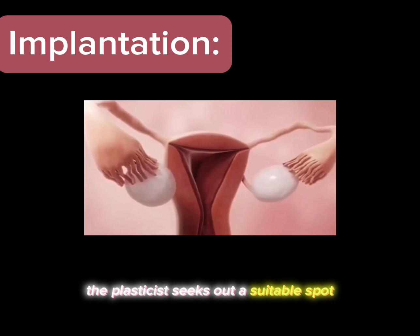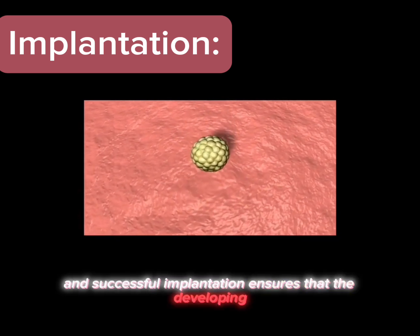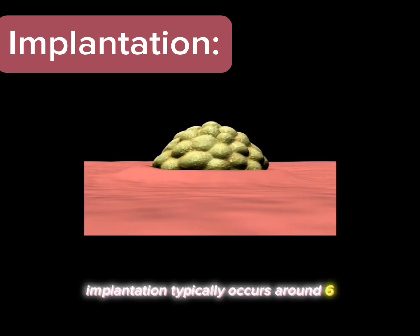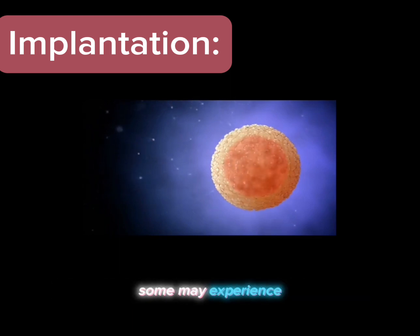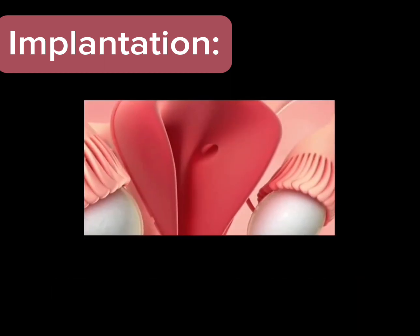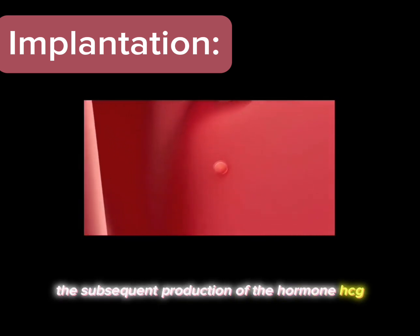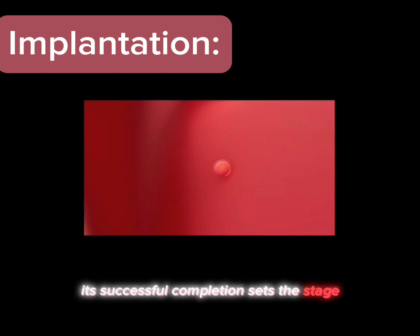Upon reaching the uterus, the blastocyst seeks out a suitable spot within the uterine lining to attach itself. This delicate process of successful implantation ensures that the developing embryo receives essential nutrients and oxygen from the mother's bloodstream through the placenta. Implantation typically occurs around 6 to 10 days after fertilization, though this can vary. Some women may experience minor spotting or cramping, but many remain unaware of this critical event. The subsequent production of the hormone HCG (human chorionic gonadotropin) after implantation is what home pregnancy tests detect.